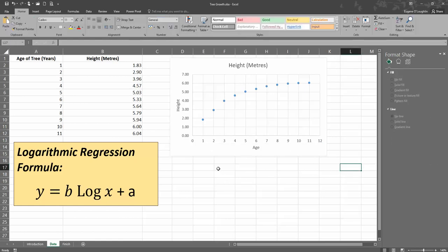Now looking at this, you can see that as trees get older, their height increases. But you can see there's a little bit of a levelling off and we've got a curve here. So a simple linear regression will not be suitable here. So we need something different, and that's where our logarithmic regression formula comes in.